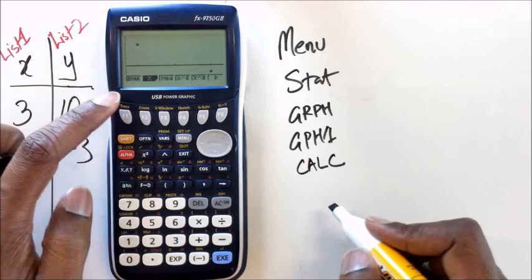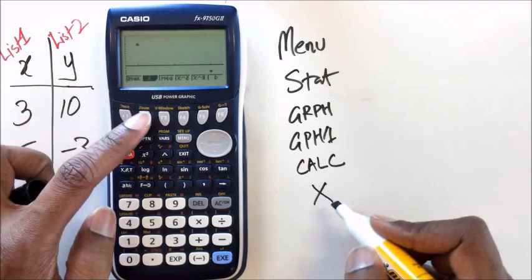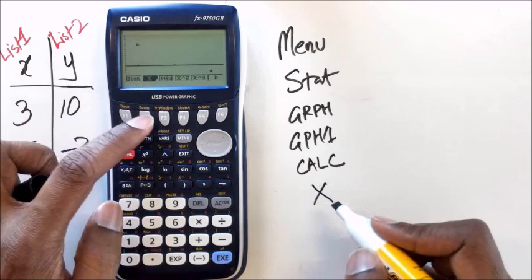Now at this point you want to press Calc which is also F1 and once you go to this menu, you should see something called x which is F2 as you can see there. If you click on that,